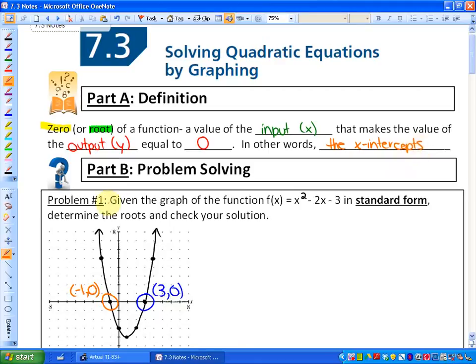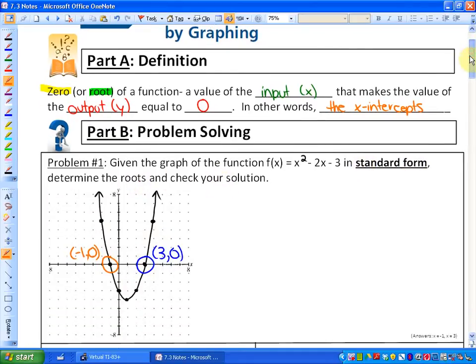So here is problem number one. It says given the graph of the function f(x) = x² - 2x - 3, so that's this graph here, which we looked at how to graph in the previous section. In standard form, determine the roots and check your solution. So the roots, quite straightforward actually, are the two that are indicated. The roots are when x is three, y is zero, and when x is negative one, y is zero. Those are considered your roots. So the roots here would be x = 3 and also x = -1.